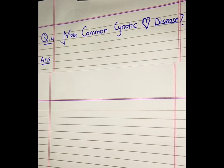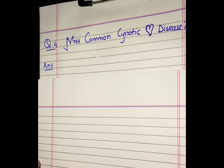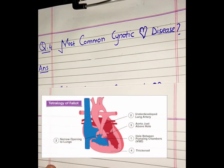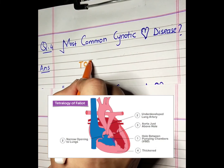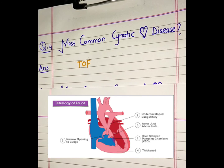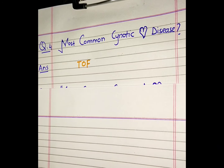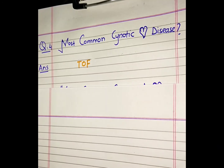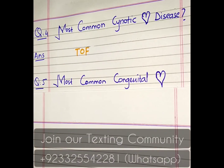If you have already read it, you would be familiar with Tetralogy of Fallot. You should definitely read it because MCQs on this topic are common. It is the most common cyanotic heart disease. Don't confuse it with Transposition of Great Vessels or Arteries.